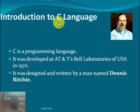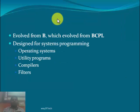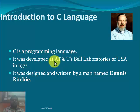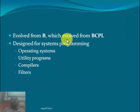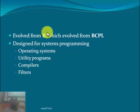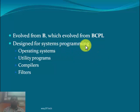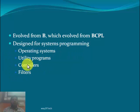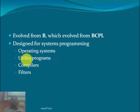So why the name C? Why not A or B? In the 1970s, the B language was popular. B language was evolved from BCPL — first there was BCPL language, from BCPL came B language, and so the new language was named C. It was designed for system programming — to make the Unix operating system and to do system programming. System programming includes developing operating systems, utility programs like WordPad and Microsoft Office, compilers, and filters.